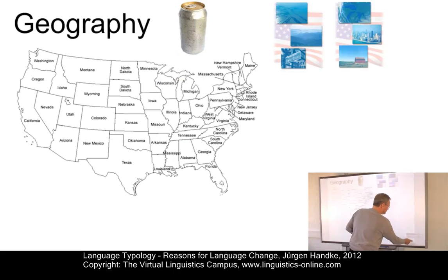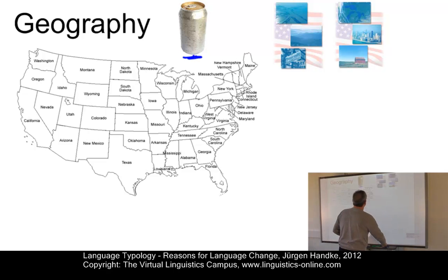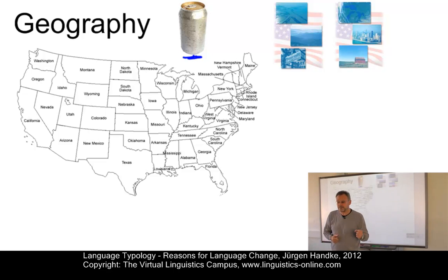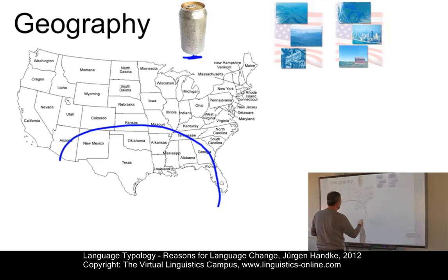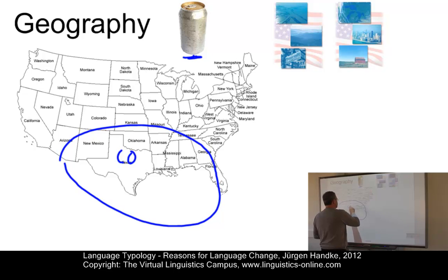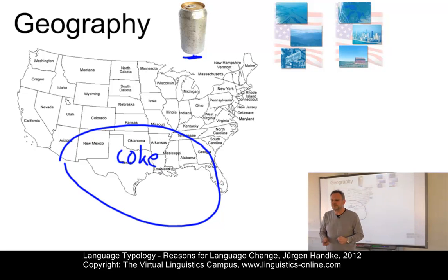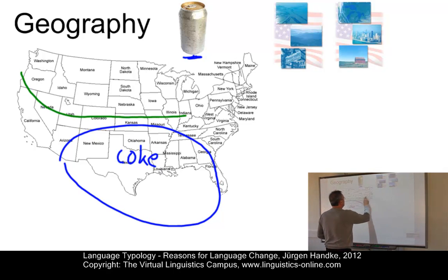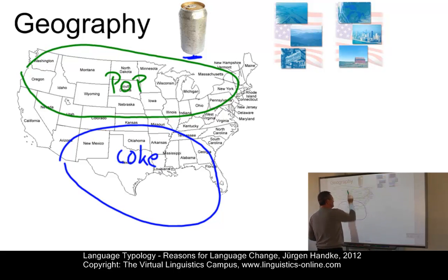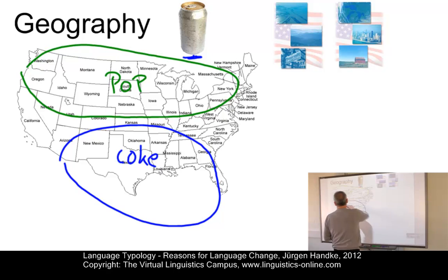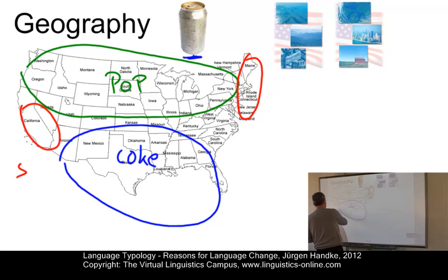Here is an example from North America. When people want to buy a carbonated drink to quench their thirst, what would they say when they order it? Would they ask for a soda, a pop, a coke, or something else? Quite interestingly, in the South, the generic term coke is used. Pop, by contrast, dominates the North and the Northwest, so that is an area where people would order a pop. In California and in parts of the Northeast, people would prefer the term soda.